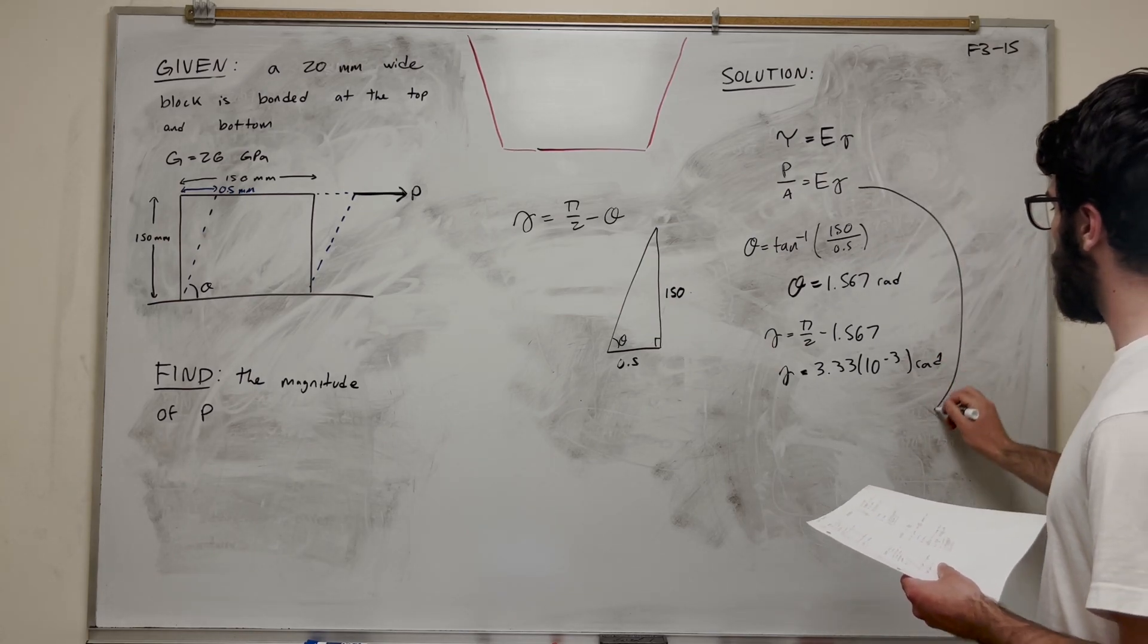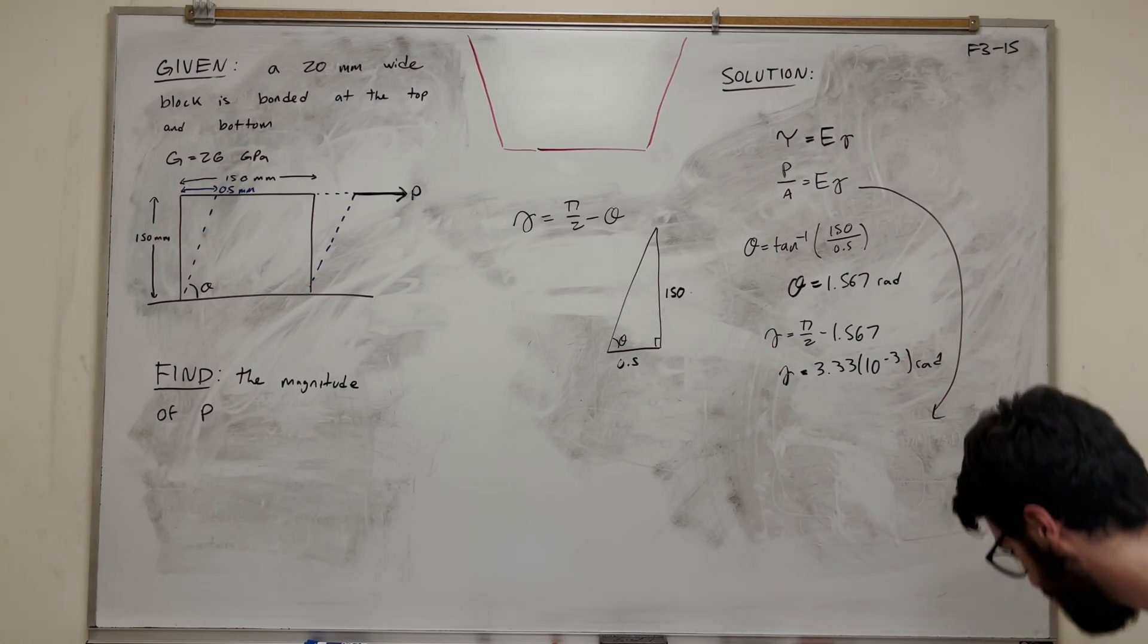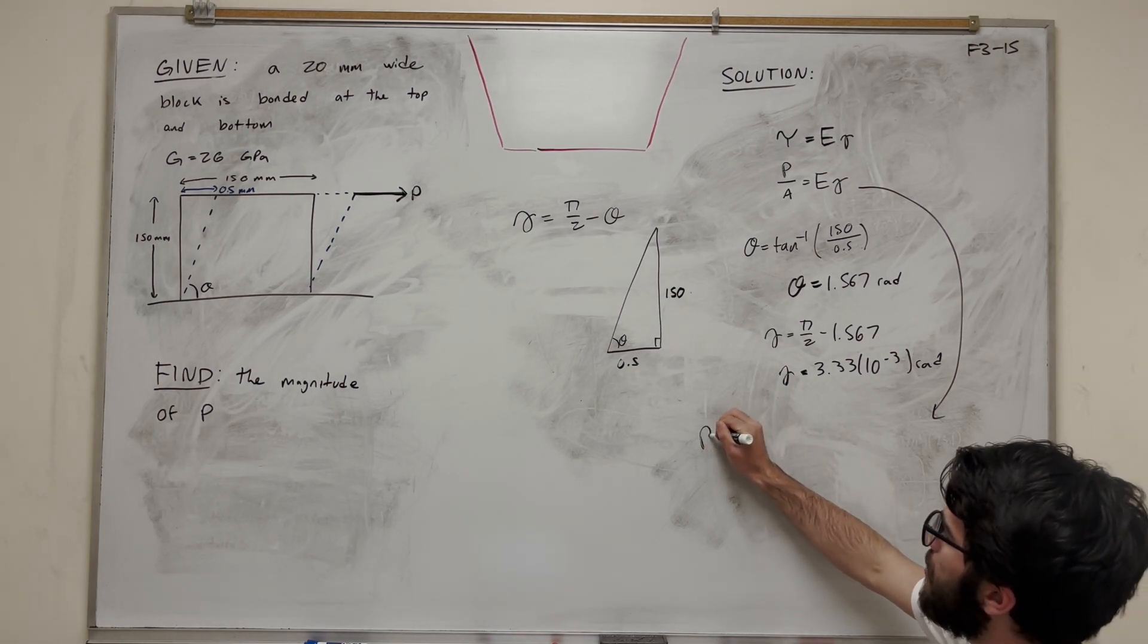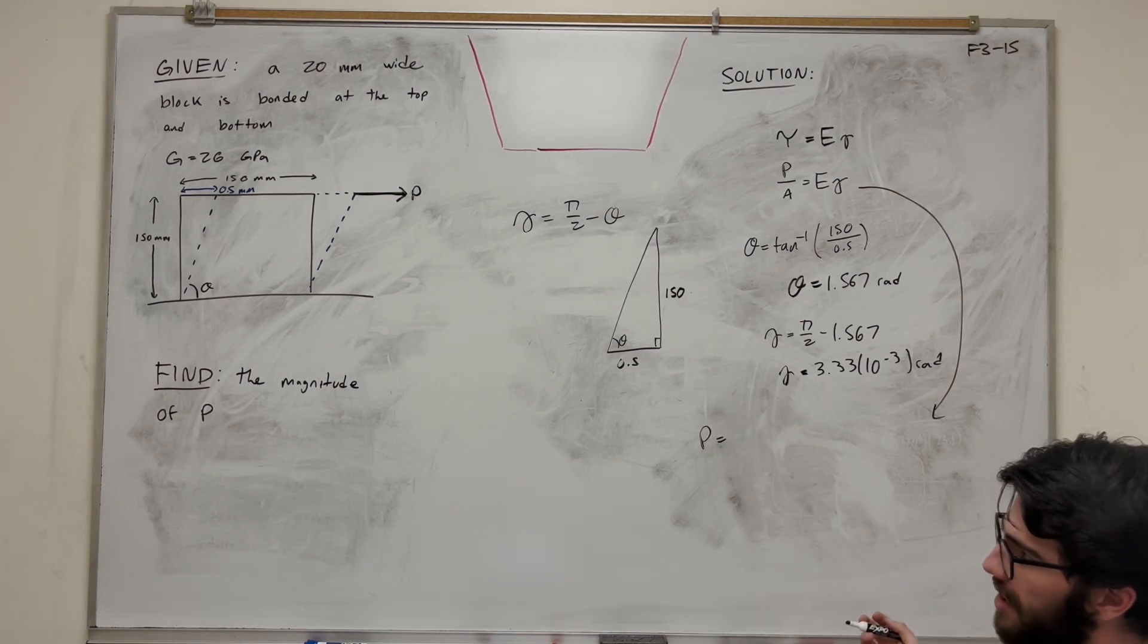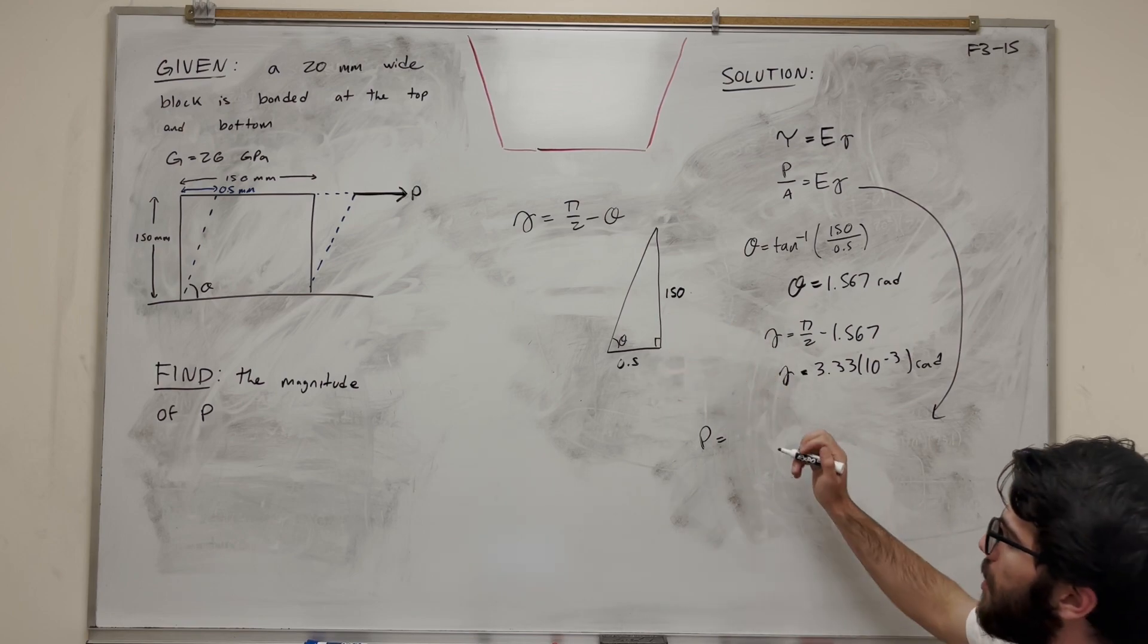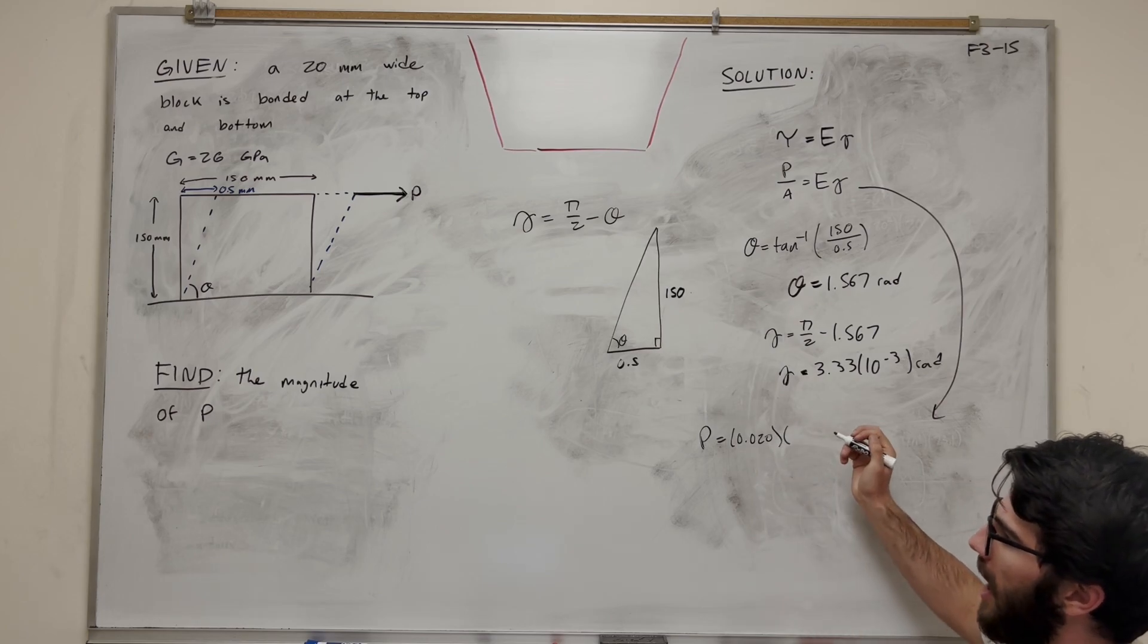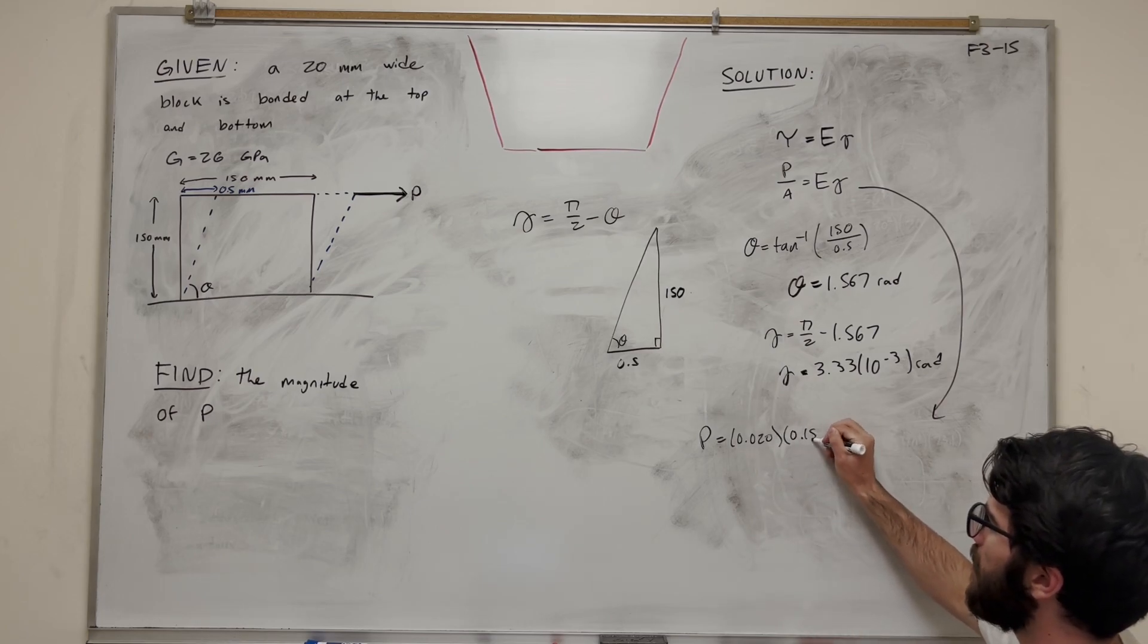Now we can go back to this equation and solve for P. I'm going to multiply area over. P equals area - area is length times height. That's 20 millimeters wide, so we're going to take 0.020 for the width. The height we know is 150 millimeters, so 0.150.